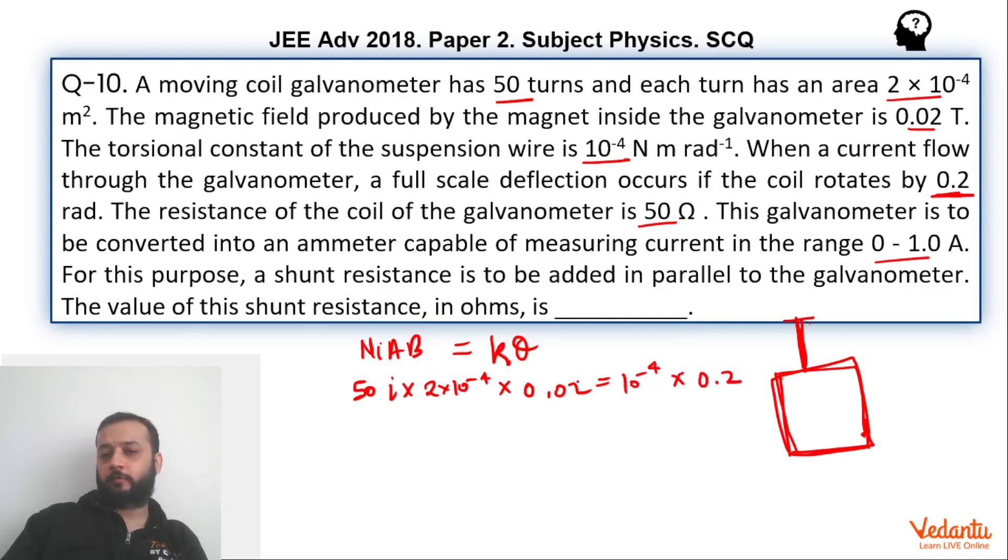So if you see, 50 and 0.02 will become 1. This 10⁻⁴ will be cancelled. So I will be 0.02 upon 2, so that will become 0.1. Hence, full scale deflection current is 0.1. This is the first part of the question.